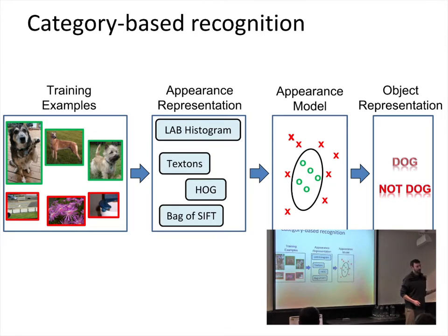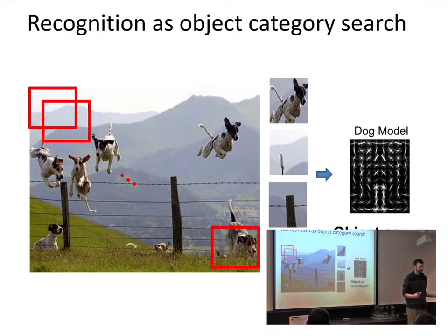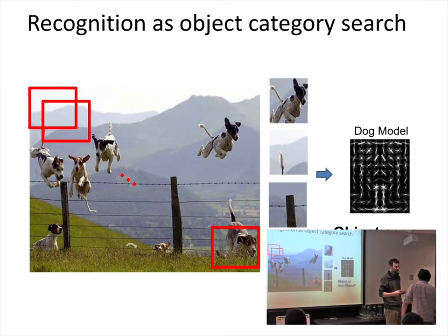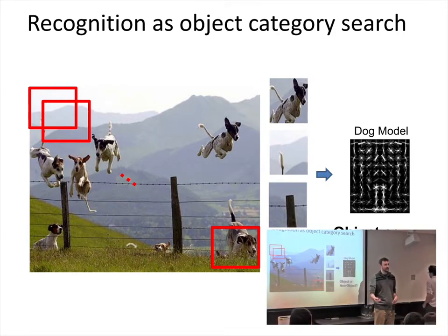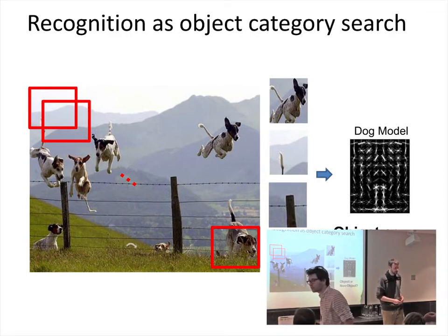From this, the object representation that the computer system has is that there are a few things in the world that are dogs and there's a whole lot of things that are not dogs. Then if we wanted to take this representation and find dogs in natural images, we'd search over different positions and scales, extract features in each window, and for each patch our template model would say: is this a dog or not? If we wanted to recognize more different kinds of objects, we would repeat the same process, just training new detectors and running them all on the image.